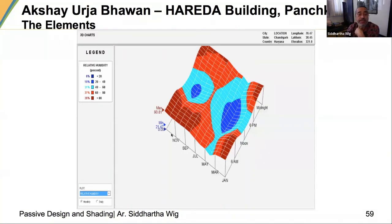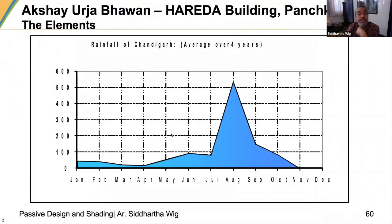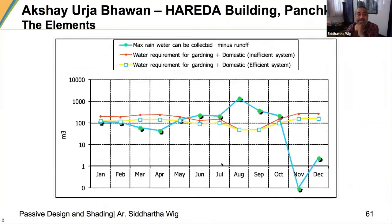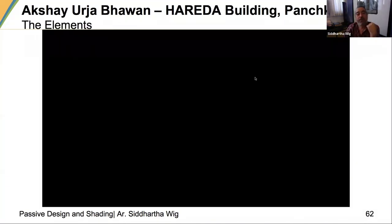We also looked at the relative humidity and the amount of rainfall in Chandigarh. About a meter of rainfall per year falls, with the majority concentrated in two months. This was important because we needed to plan our water tank size accordingly. We did detailed studies of how much water could be collected, what the water requirement was for gardening and domestic use in both inefficient and efficient systems.